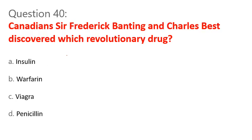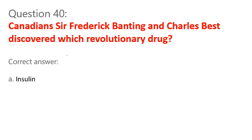Question 40. Canadians Sir Frederick Banting and Charles Best discovered which revolutionary drug? A. Insulin. B. Warfarin. C. Viagra. D. Penicillin. Correct answer: A. Insulin.